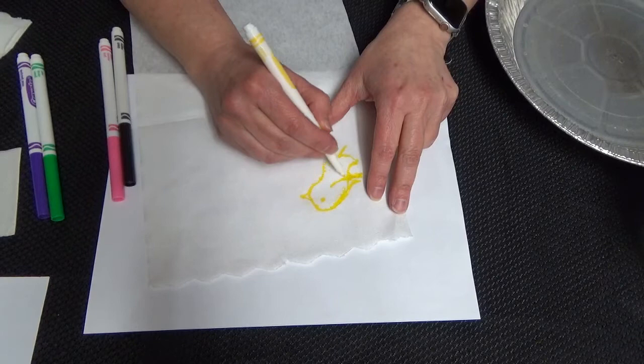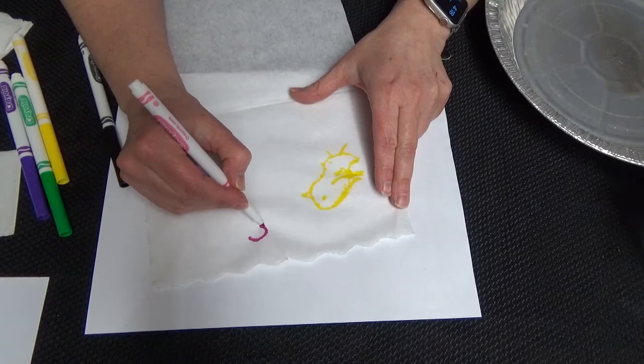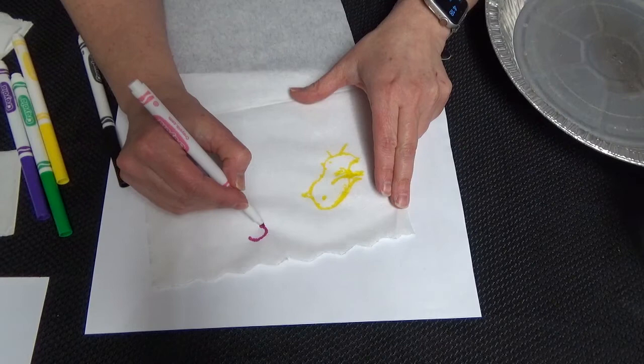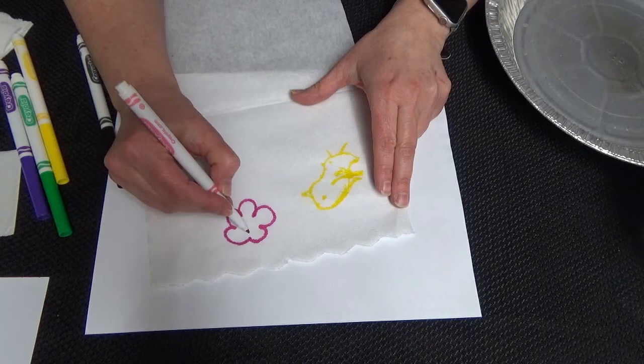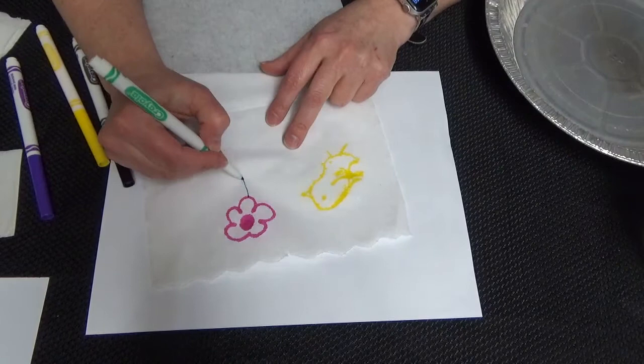There's our chick, a little wing like that. And maybe I'll draw a flower on this side. You can draw whatever you want, but this is my flower. I'm going to color it in. And I'm going to draw a stem.